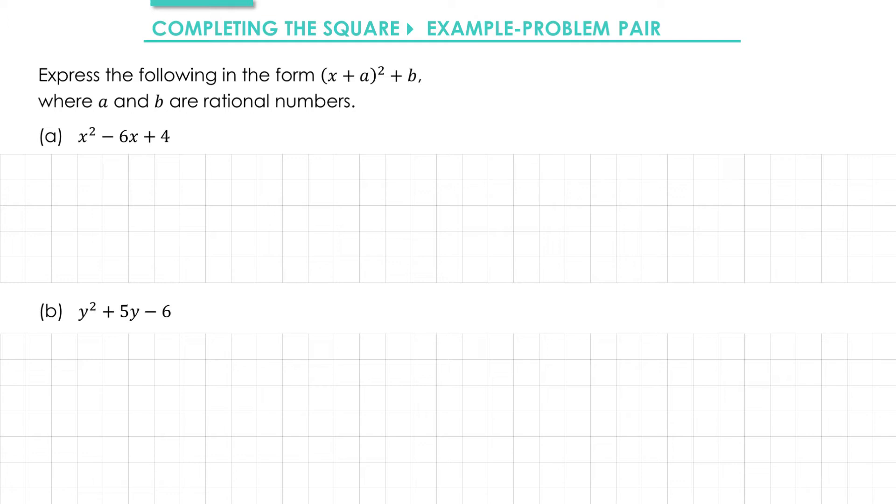So we have two quadratic expressions that we need to express in the form x plus a squared plus b, where a and b are rational numbers. A rational number simply means that it can be expressed as a fraction.